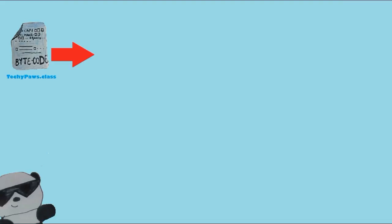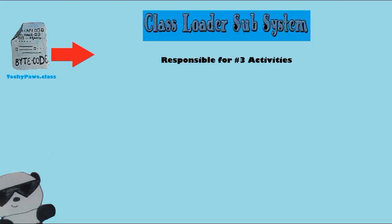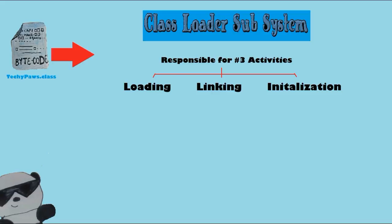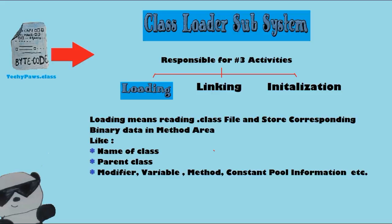The class loader subsystem is mainly responsible for three activities: loading, linking, and initialization. Loading means reading the .class file and storing the binary data in the method area. For each .class file, JVM will store the fully qualified name of the loaded class, interface, or enum; the fully qualified name of its immediate parent class; whether the file is a class, interface, or enum; modifier information; field information; method information; and constant pool information.